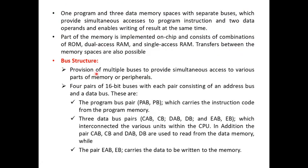There are three data bus pairs: CAB/CB, DAB/DB, and EAB/EB, which are interconnected within the various units of the CPU. The CPU contains various units, and these data buses are used for movement of data between them. In addition, CAB and DAB are used to read from the data memory, whereas EAB and EB carry data to be written to the memory.